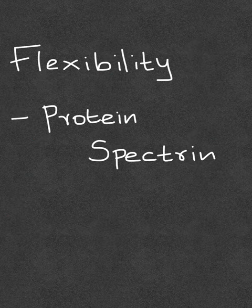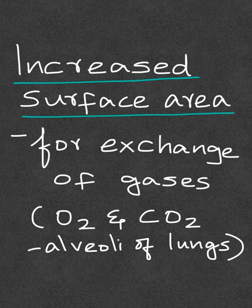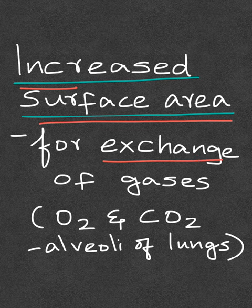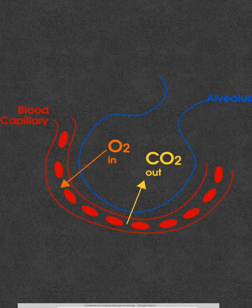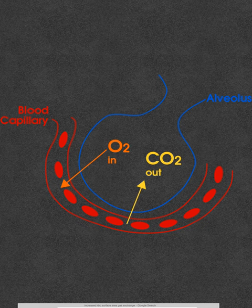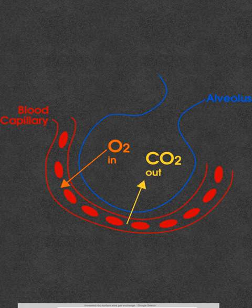Another advantage of the biconcave shape is that it provides increased surface area for the exchange of gases such as oxygen and carbon dioxide at the alveoli of the lungs. Surface area is the area occupied by the surface of a cell. This area is greater in RBCs because of the biconcave shape.